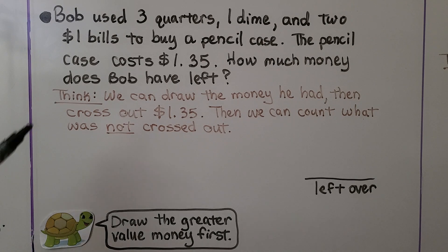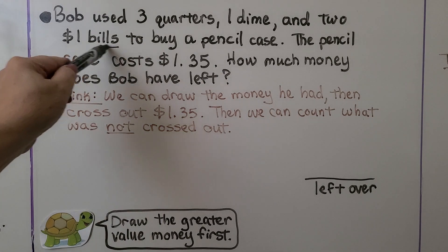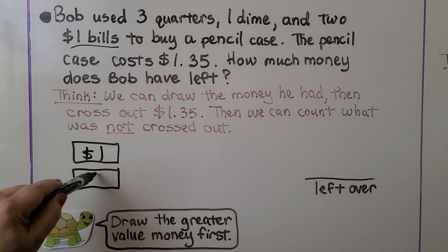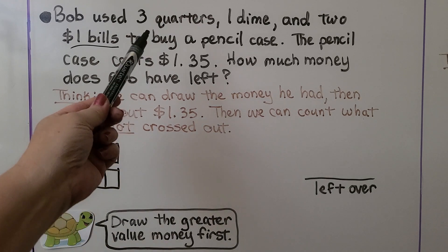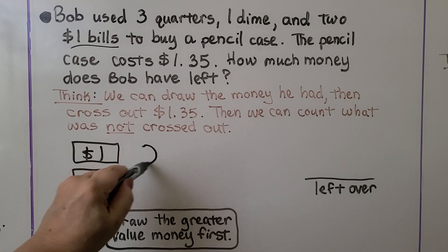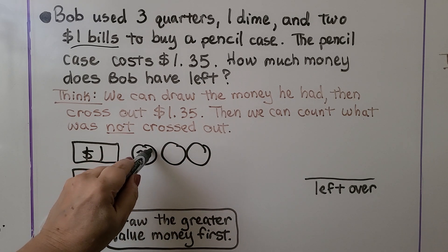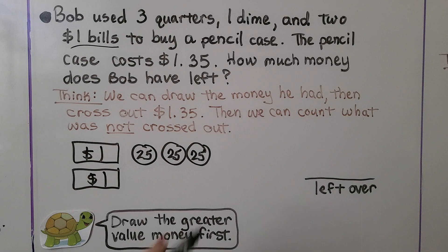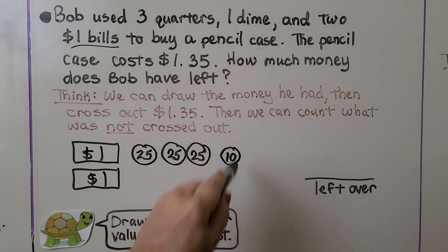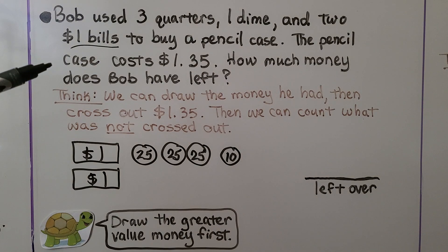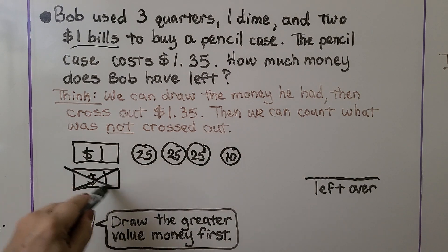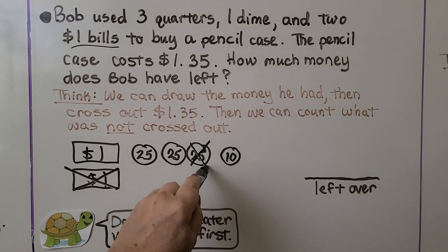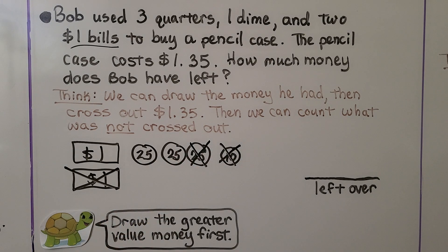We start by drawing the greater values first — that would be two $1 bills, so we make two rectangles. Quarters are the next greatest, so there are three quarters; we make three circles and write 25 inside each one, and one dime. The pencil case costs $1.35, so we cross off one dollar and 35 cents: 25, 35 — we cross off this quarter and this dime.